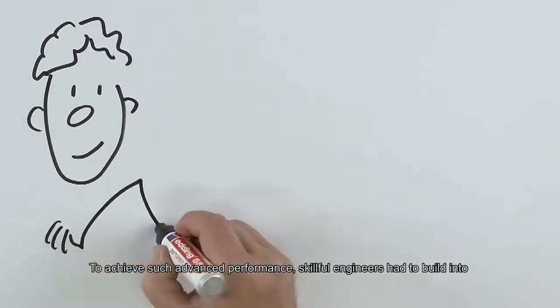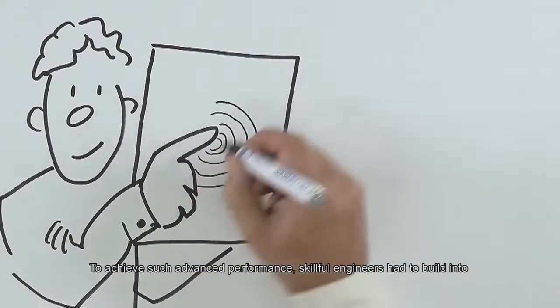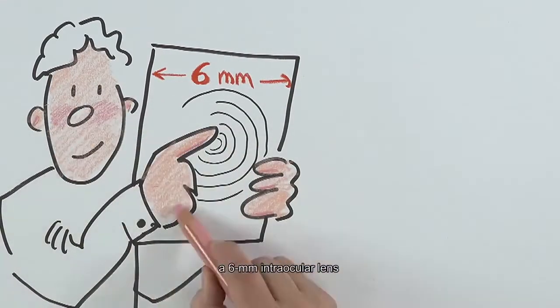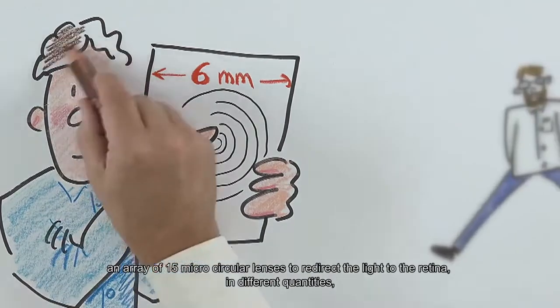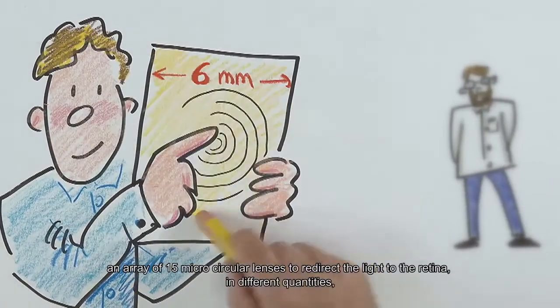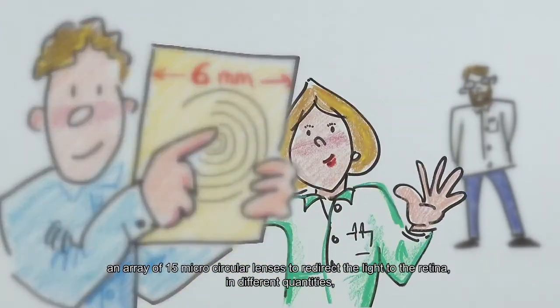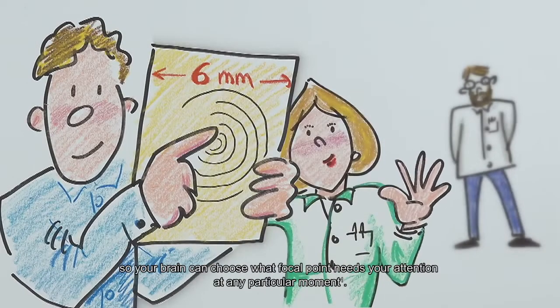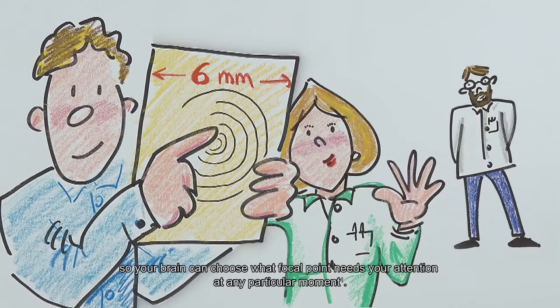To achieve such advanced performance, skillful engineers had to build into a 6mm intraocular lens an array of 15 microcircular lenses to redirect the light to the retina in different quantities so your brain can choose what focal point needs your attention at any particular moment.